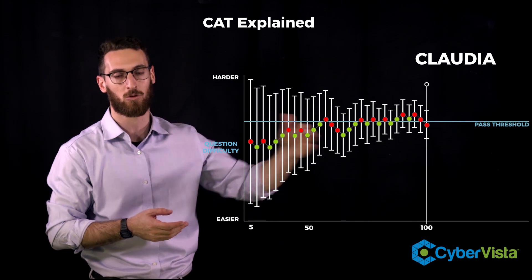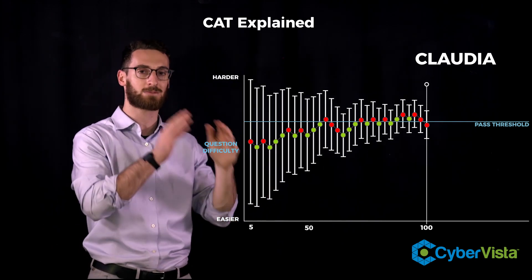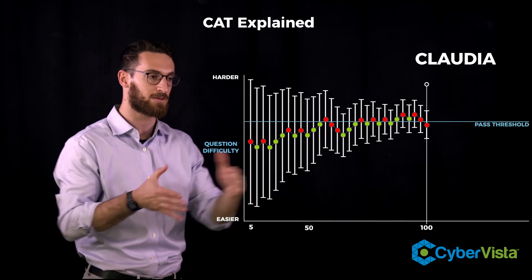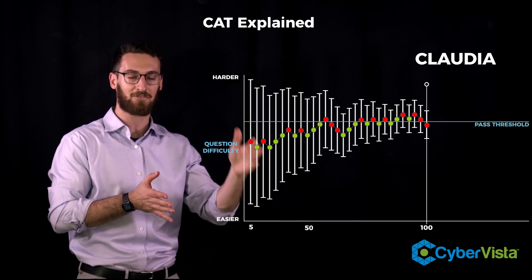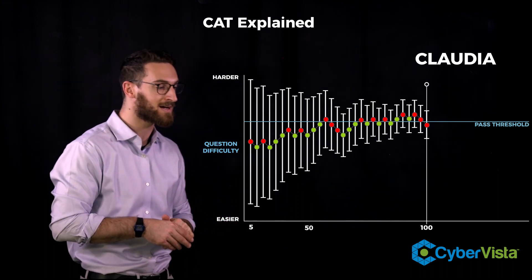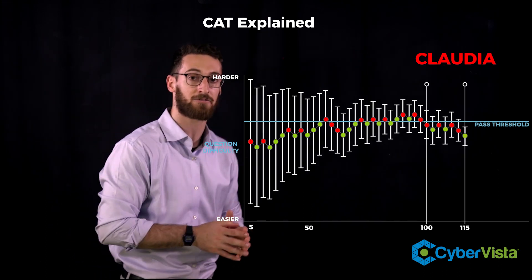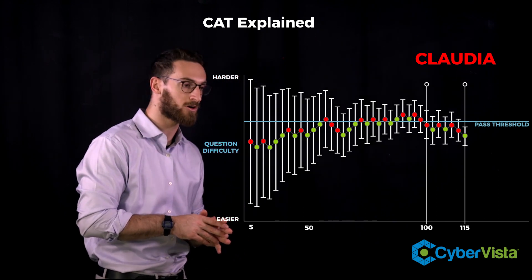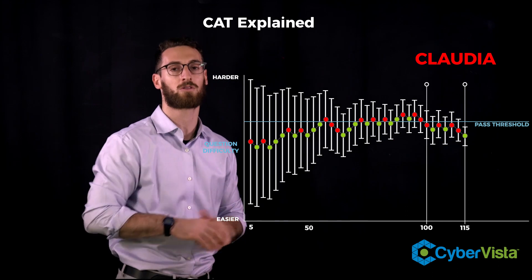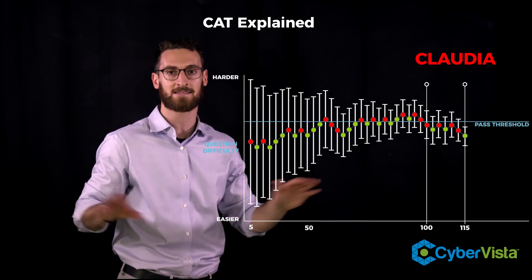It will feed you up to 50 more questions because the maximum number of questions on the CISSP exam is 150 and the minimum is 100. And after question 100, the test could end at any point. So for Claudia, the test actually ends at 115 because for her, her overall score and confidence interval range is below the pass threshold. So the test ends at that point.